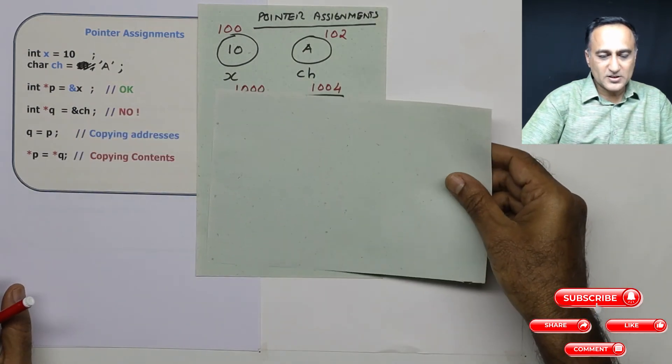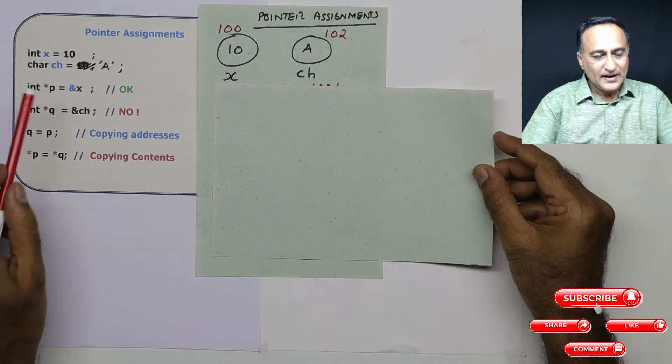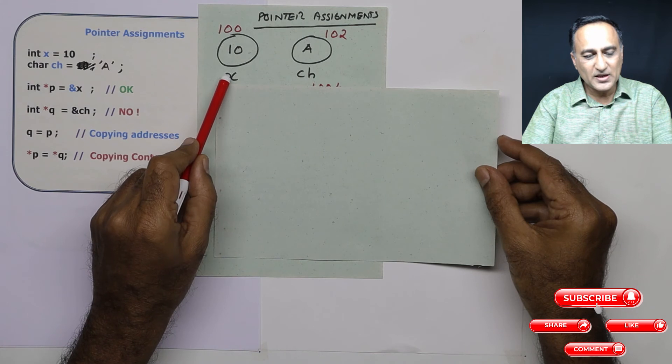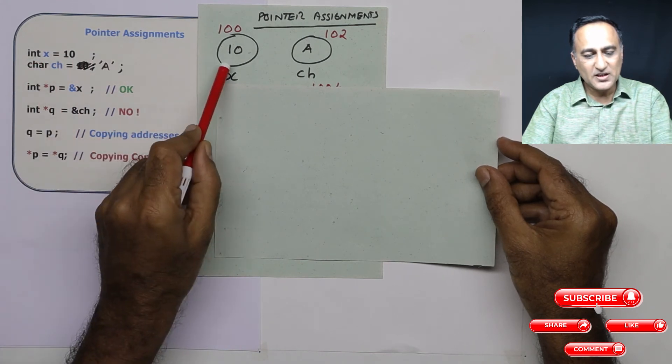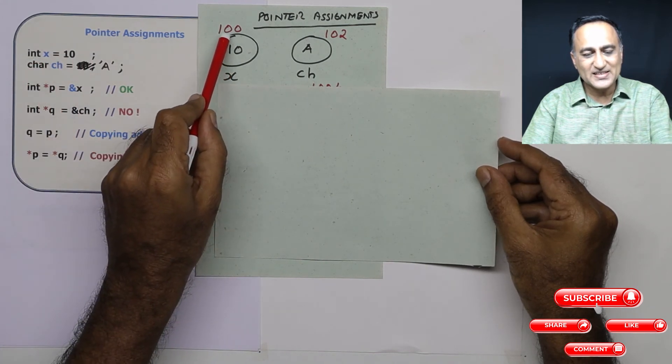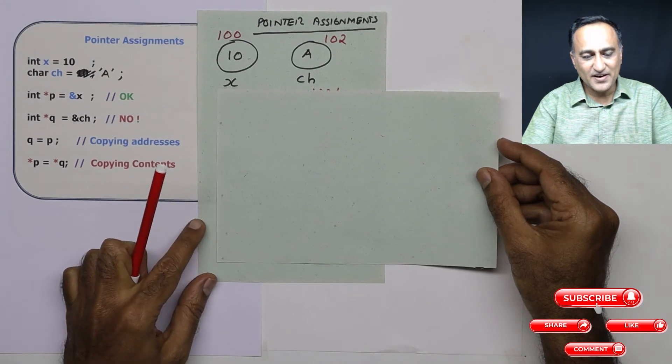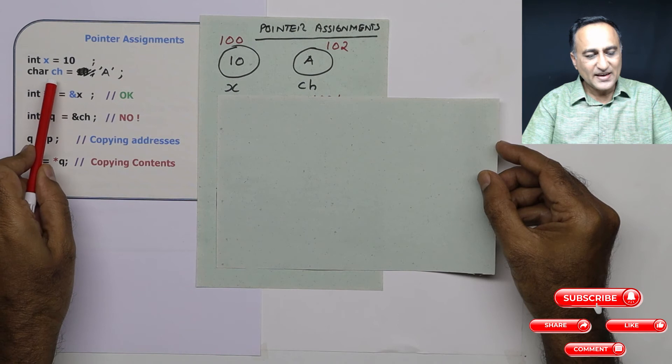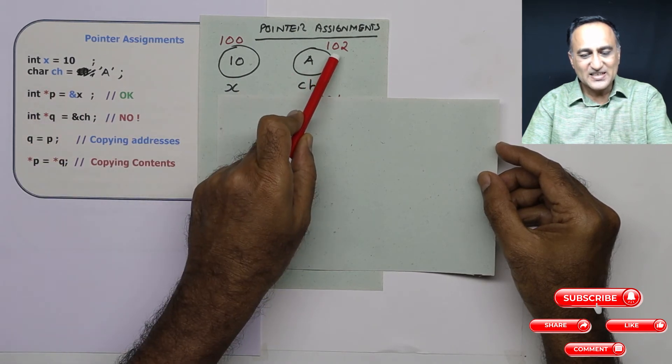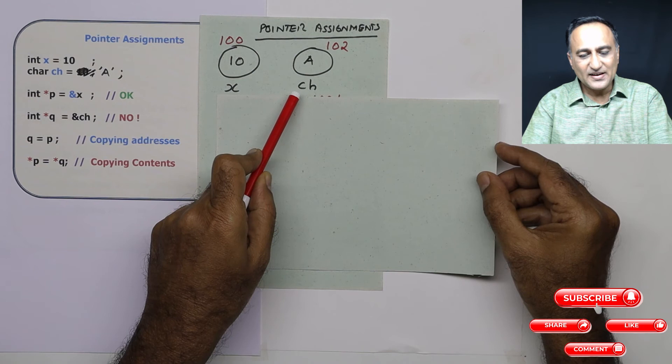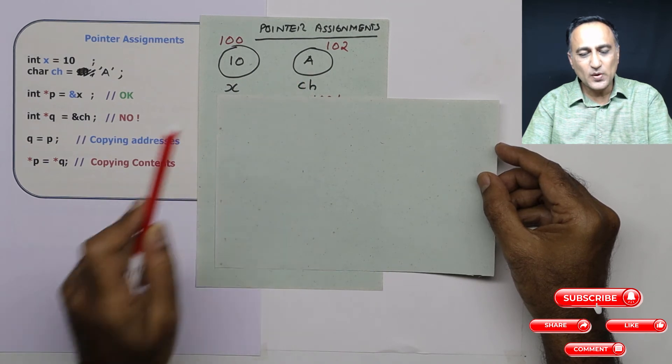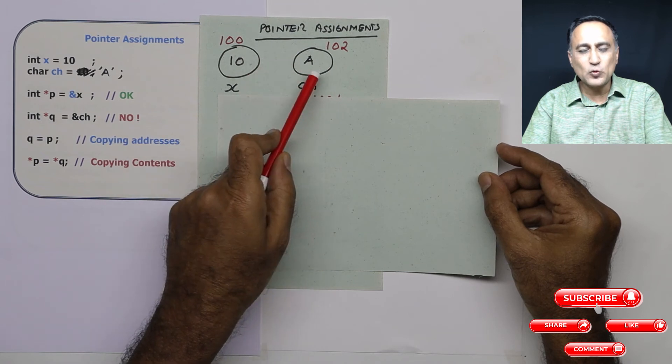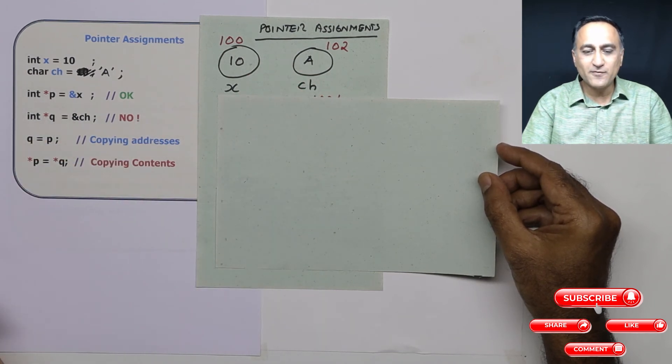Let me say I declare int x with the initial value 10. So x is a variable of the type integer with the initial value 10 and let us say it is residing at address 100. Now let us say I have another character variable ch residing at address 102 with the initial value a. Just for simplicity I have assumed integer of 2 bytes but generally integer is going to be 4 bytes.